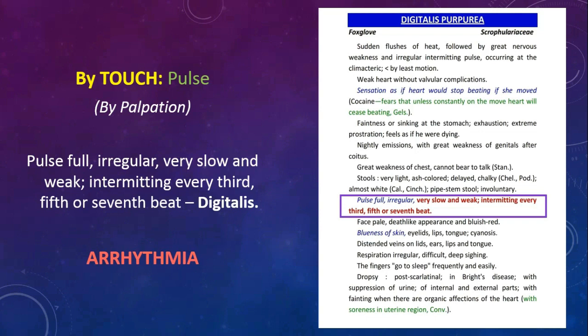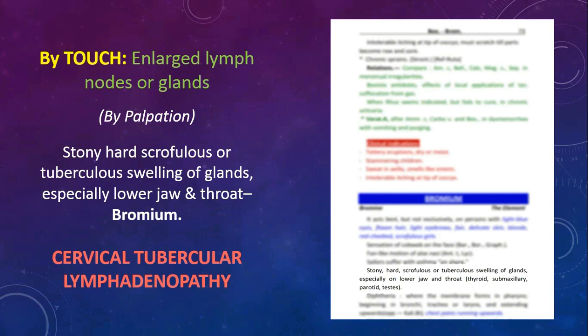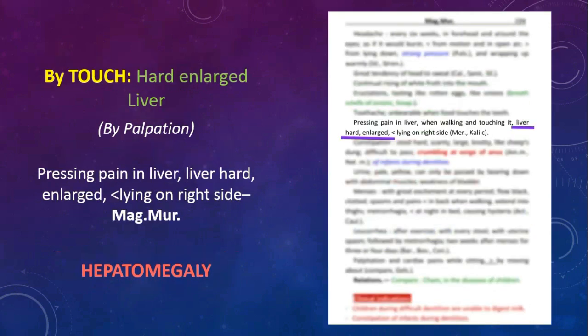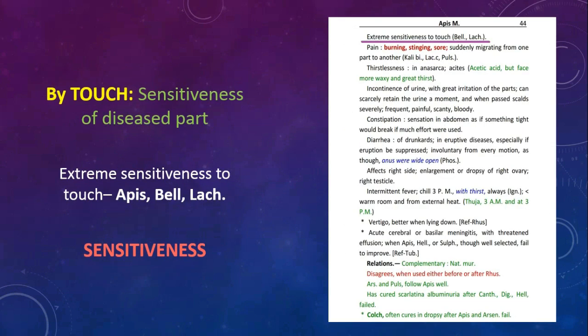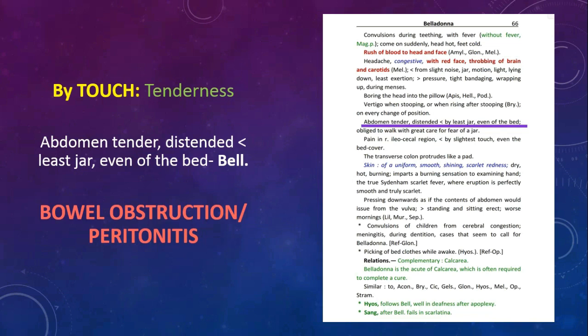Similarly, diagnosis of arrhythmia through signs and symptoms of pulse — full, irregular, trembling — and lower, very slow and weak, intermitting every 3rd, 5th or 7th beat in Digitalis. Diagnosis of cervical tubercular lymphadenopathy through stony hard, scrofulous or tubercular swelling of glands, especially lower jaw and throat in Bromium. Diagnosis of hepatomegaly through pressing pain in liver, liver hard enlarged, aggravation by lying on right side in Mag Mur. Extreme sensitiveness to touch in Apis, Belladonna and Lachesis.